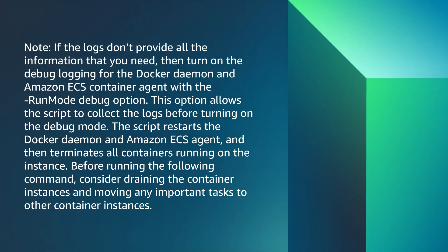Please note, if the logs don't provide all the information that you need, then turn on the debug logging for Docker daemon and Amazon ECS container agent with the -RunMode Debug option. This option allows the script to collect the logs before turning on the debug mode. The script restarts the Docker daemon and Amazon ECS agent and then terminates all the containers running on the instance.